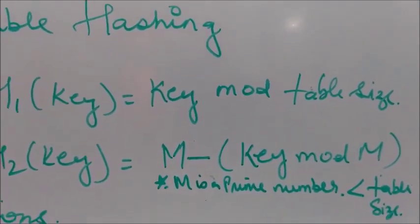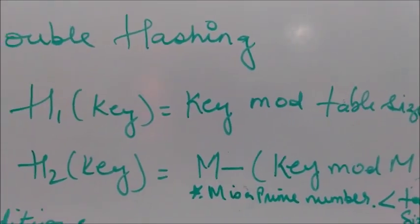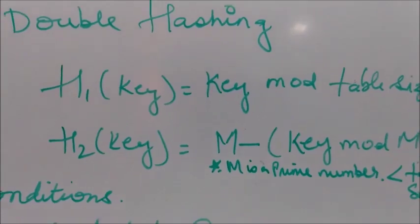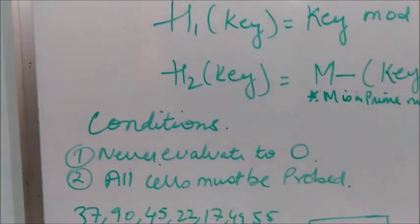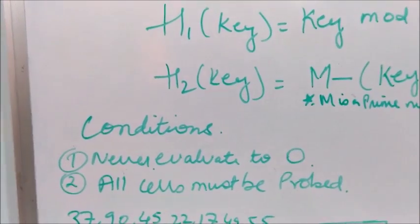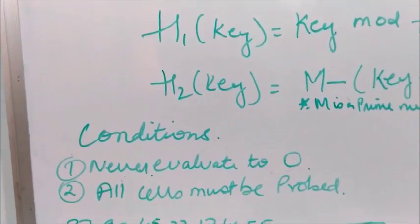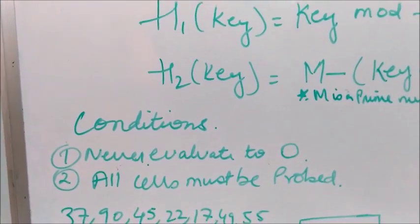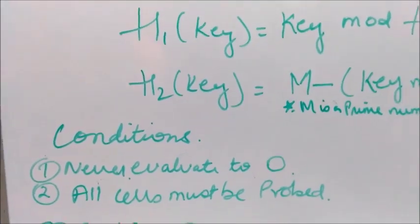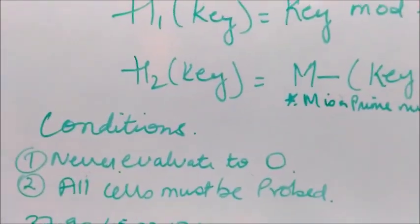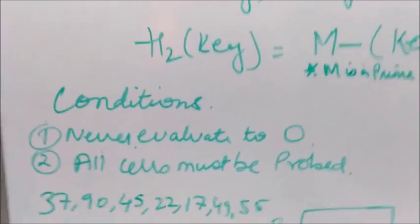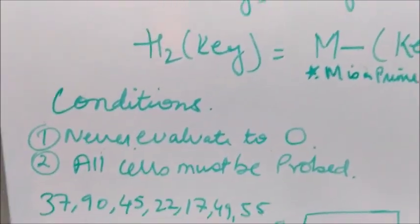There are two conditions which we need to look at. First condition is the second hash function must never evaluate to zero. And all cells must be probed - every cell must be reachable. Now let us take an example.